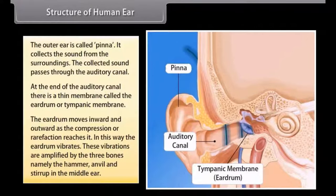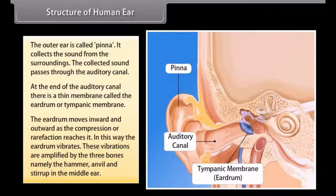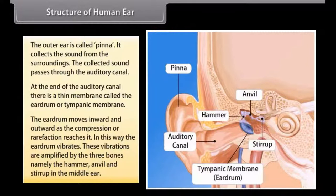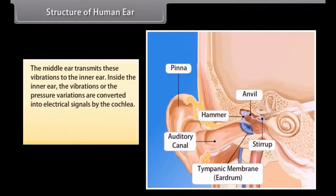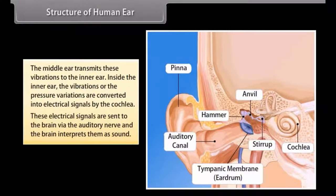These vibrations are amplified by the three bones namely the hammer anvil and stirrup in the middle ear. The middle ear transmits these vibrations to the inner ear. Inside the inner ear the vibrations or the pressure variations are converted into electrical signals by the cochlea. These electrical signals are sent to the brain via the auditory nerve and the brain interprets them as sound.